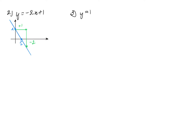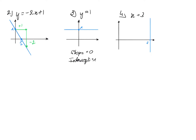If y is equal to 1 — so we only have an intercept and no slope — the line is parallel to the x-axis and is constantly equal to 1. In this case the slope is 0 and the intercept is 1. And if x is equal to 3, we get a line parallel to the y-axis, for which the slope does not exist and there is also no intercept.